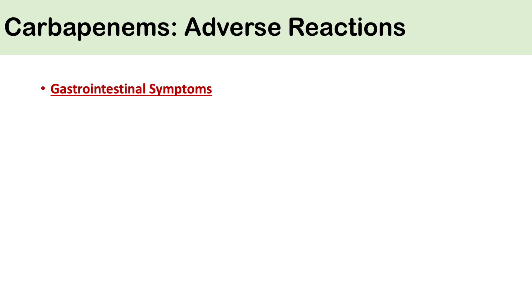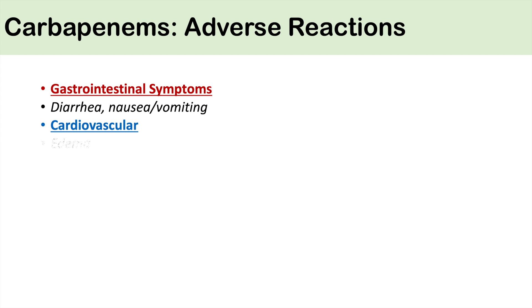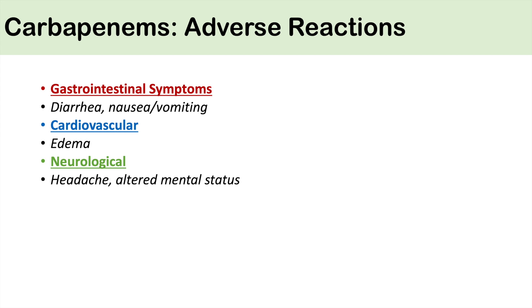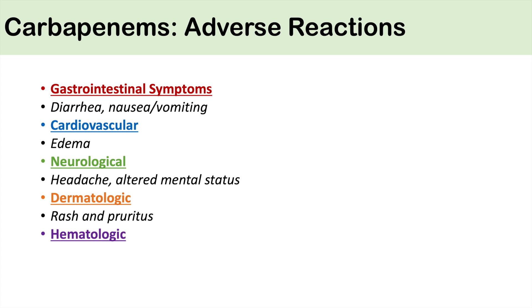The adverse reactions to the carbapenems include the most common, which are gastrointestinal symptoms such as diarrhea, nausea, and vomiting. Some other adverse reactions include cardiovascular side effects like edema, neurological side effects like headache and altered mental status, dermatologic issues like rash and pruritus, and hematologic adverse reactions like anemia, thrombocytopenia, and neutropenia.